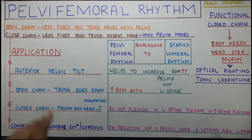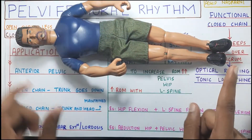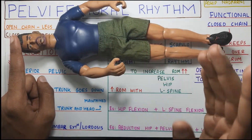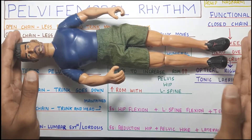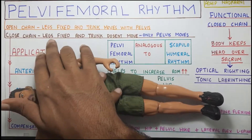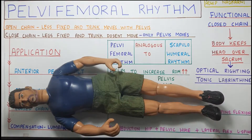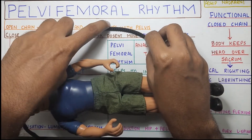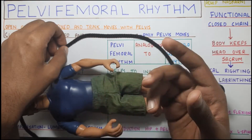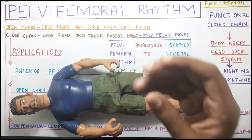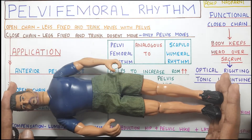Now what is closed chain? In closed chain, both ends will be fixed. Your first end is your legs, and the second end is your head. It is very hard to fix your head - legs we can understand, but the head is a little harder. In closed chain, your legs will be fixed and the trunk does not move - only the pelvis moves. The pelvis can go for anterior or posterior pelvic tilt, or lateral tilt or rotation - all the movements we discussed about the pelvis in our last video.